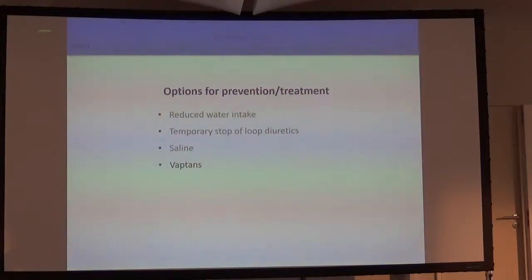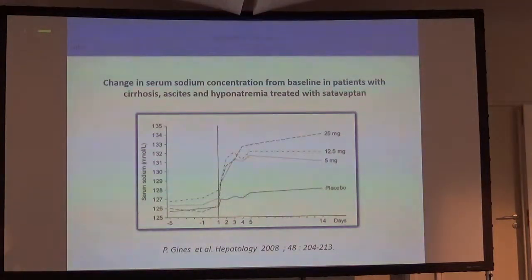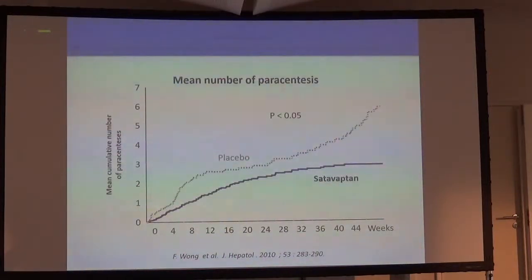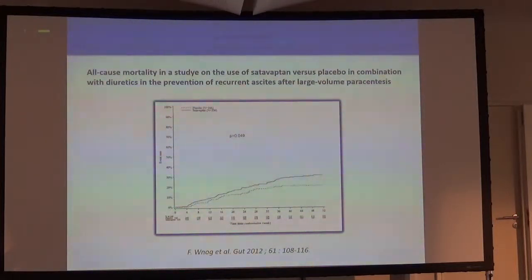Let me speak about vaptans. The rationale is strong — what we obtain with vaptans is to avoid the binding of vasopressin to the V2 receptor. Satavaptan was very effective in correcting hyponatremia in patients with cirrhosis compared to water restriction, and was also able to improve the management of refractory ascites when given together with diuretics. However, in a long-term study, Satavaptan increased the mortality rate compared to placebo in cirrhotic patients with decompensated cirrhosis when used together with diuretics, so development of this drug was stopped.